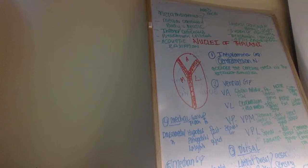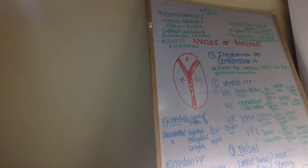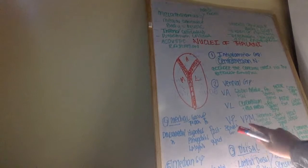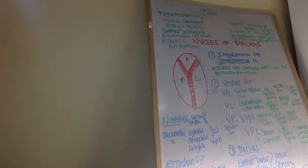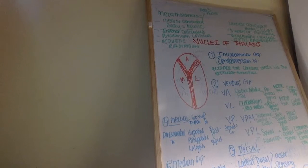For VL (ventralis lateralis), recall from the cerebellum video the mnemonic CPCD: from cerebral cortex to pontine nuclei to cerebellar cortex, then to the dentate nucleus, which projects to either the red nucleus or the thalamus. The dentate nucleus projects to VL — the cerebellum has L's in it, so it goes to VL. Input to VL is from the cerebellum and red nucleus, and it outputs to the precentral gyrus (primary motor cortex), also forming part of the corticocerebellar tract.